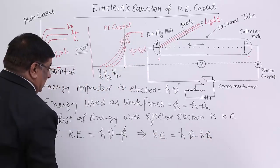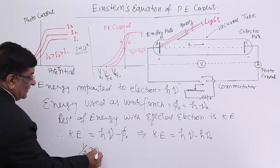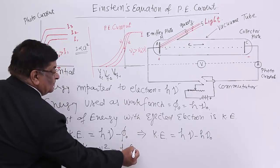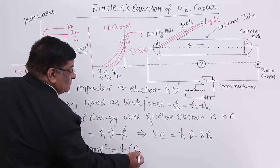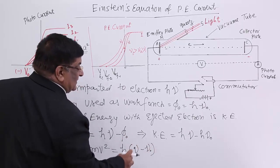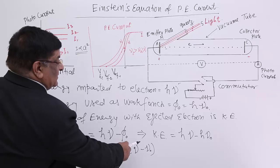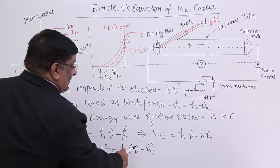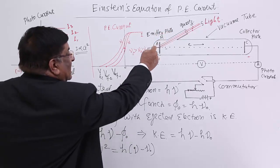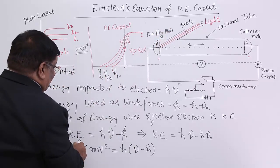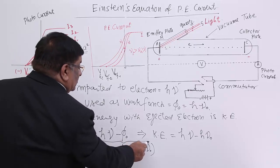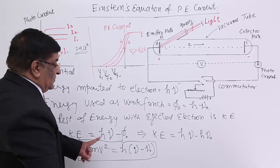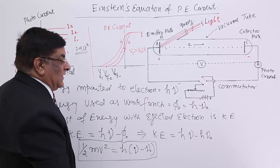This kinetic energy is half mv squared, and this is equal to H times (nu minus nu not). Nu not is the threshold frequency for that particular metal, and nu is the frequency of the incident light. That gives the kinetic energy to the electron. This calculation was given by Einstein, so this is known as Einstein's formula for kinetic energy.